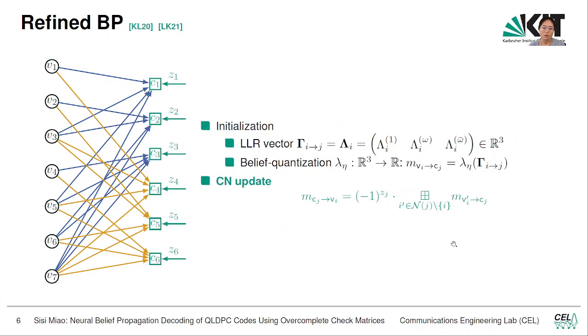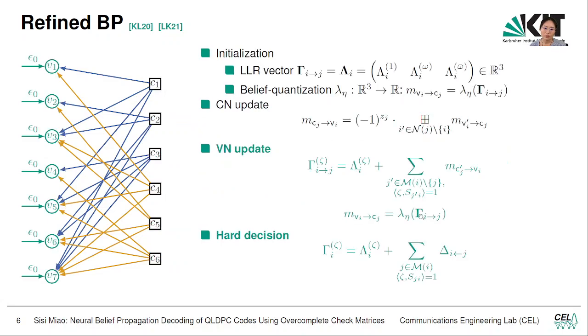That's the initialization. Then we will pass the message to the check nodes, which perform the usual sum-box-plus operation over the extrinsic messages. The syndrome is used to flip the sign of the message if a certain check node is said to be unsatisfied by the measurement we did earlier. Then we can pass the message to the variable nodes, which does the sum of the channel information together with the extrinsic message. Then again we do the belief quantization to compress it into the scalar message. Hard decision is also performed to estimate error here. We repeat this process until the syndrome is matched or the maximum number of iterations has been reached.